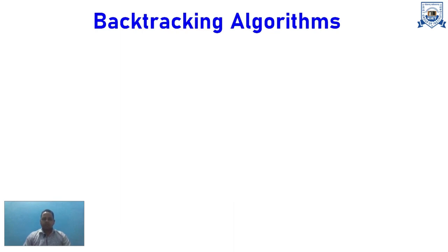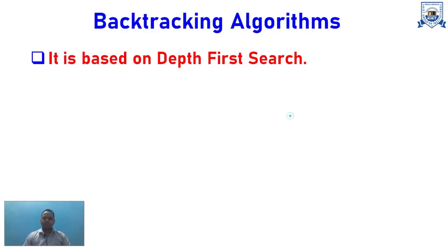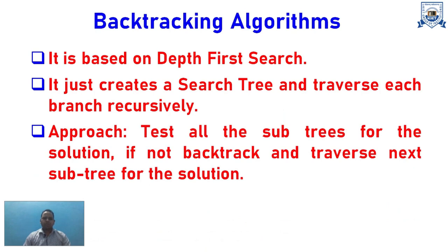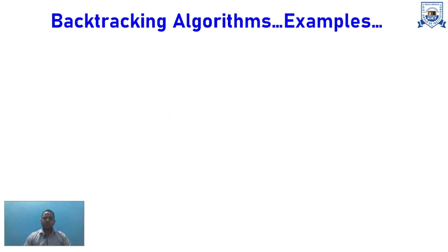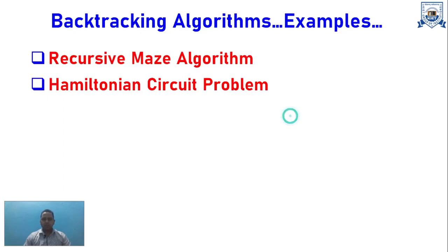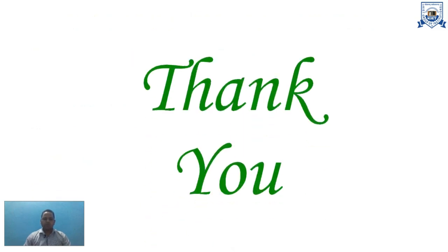The Backtracking algorithm is based on Depth First Search. It creates a search tree and traverses each branch recursively. If a dead end is reached with no solution, it backtracks that branch and moves to the next. The approach is to test all sub-trees for a solution; if nothing is found, backtrack and traverse the next sub-tree. Examples include solving a Recursive Maze, Hamiltonian Circuit Problem, Subset Problems, N-Queens Problem, and Graph Coloring.